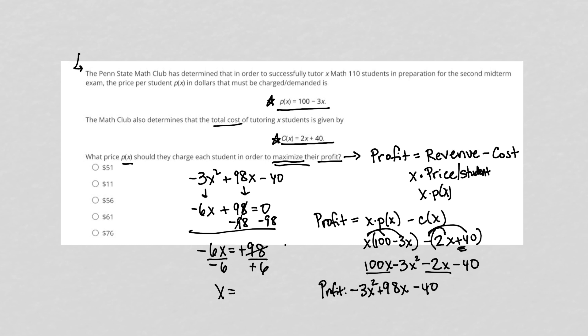98 divided by 2 is 49, and 6 divided by 2 is 3. So I'm going to just call this X equals 49 over 3. So that's my X value.